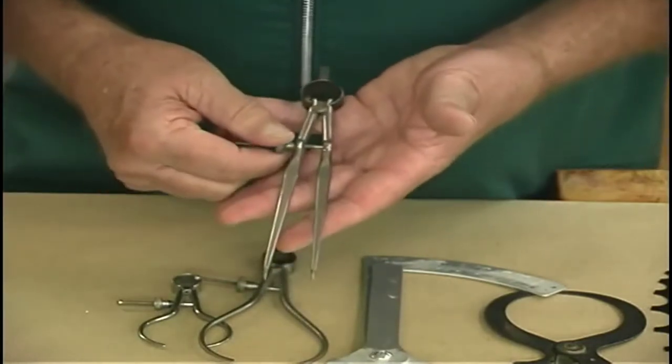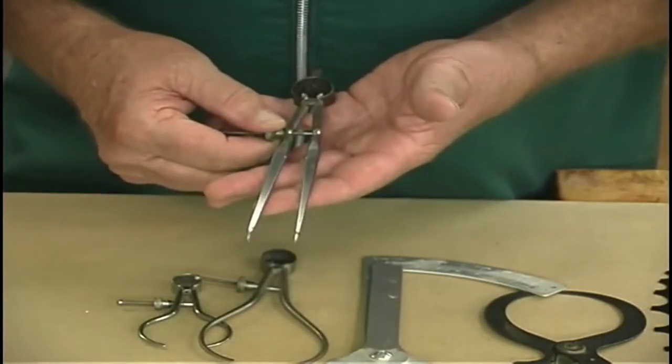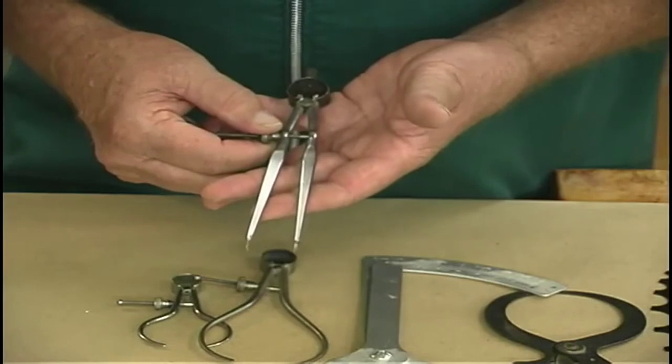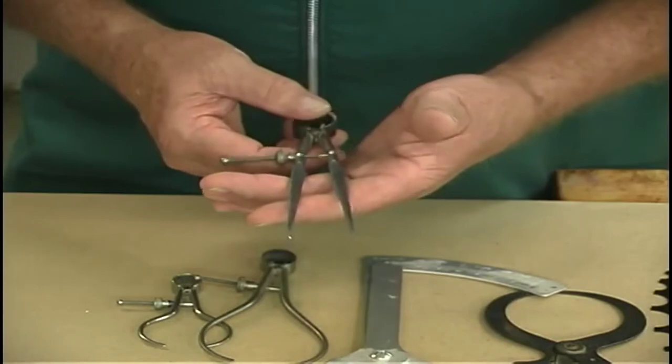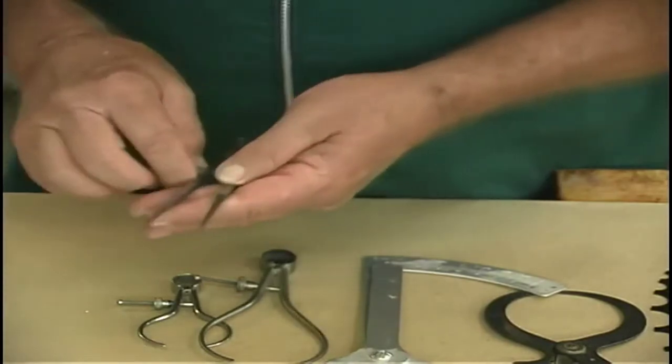This is just a regular divider. We use it a lot for laying out circles. You can also go in and set a diameter on a face plate. They're very, very useful.